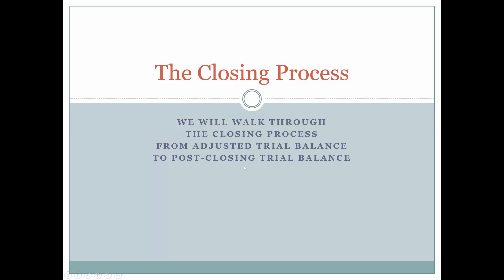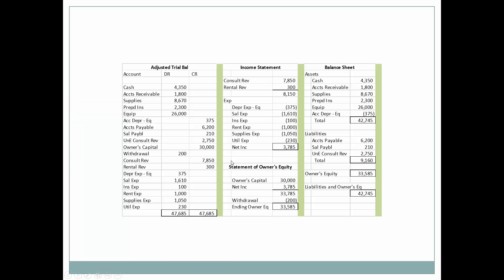Let's go through the closing process. We want to move from the adjusted trial balance to the post-closing trial balance. This is our adjusted trial balance, and once we're at this stage we're ready to prepare the financial statements. Here we can see we have to prepare the financial statements in a certain specified order.